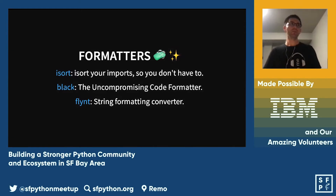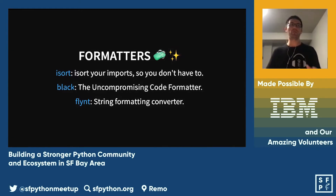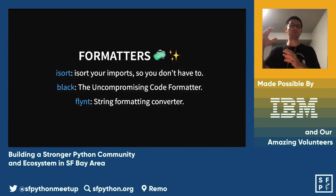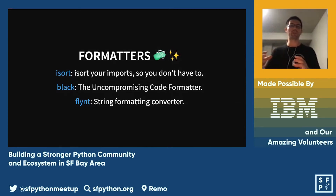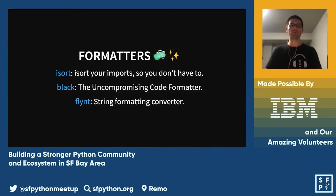Formatters will increase consistency in your codebase and dramatically improve readability. The first one is iSort, which helps you organize your imports based on the standards: first the standard library imports, then third-party imports, and finally local and application imports — ordering everything alphabetically as well.